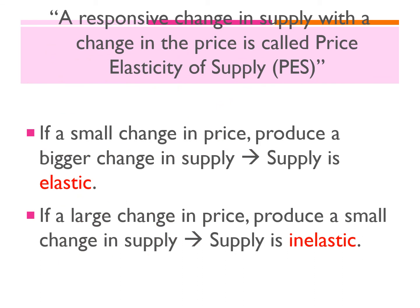A responsive change in supply with a change in price is called price elasticity of supply, or PES. If a small change in price produces a bigger change in supply, supply is elastic and the answer will be greater than one. The same rules apply as with PED.